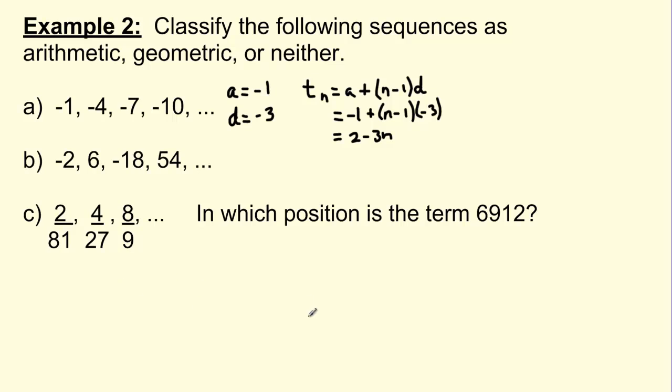On to B. Negative 2, 6, negative 18, 54, and so on. Does this have a common difference, a common ratio, or neither? Well, to go from negative 2 to 6, I can either add 8, but to go from 6 to negative 18, 6 plus 8 does not equal negative 18. It equals 14. So let's try multiplying. Negative 2 times negative 3 equals 6. 6 times negative 3 equals negative 18. And negative 18 times negative 3 is 54. So this looks geometric. And indeed it is.